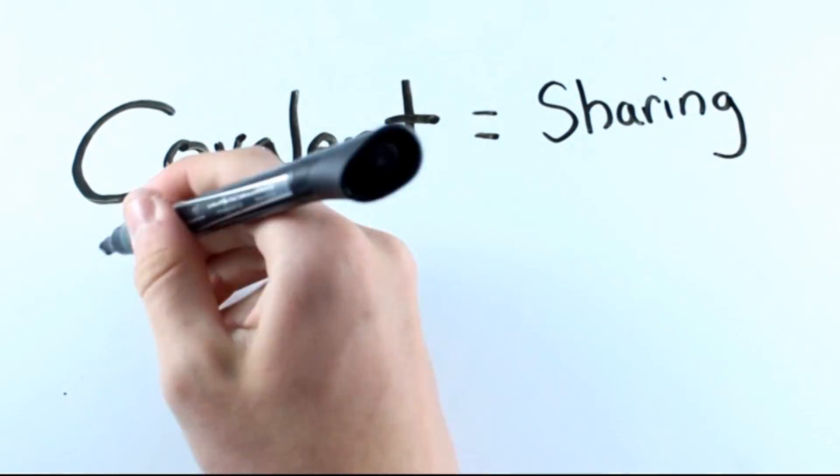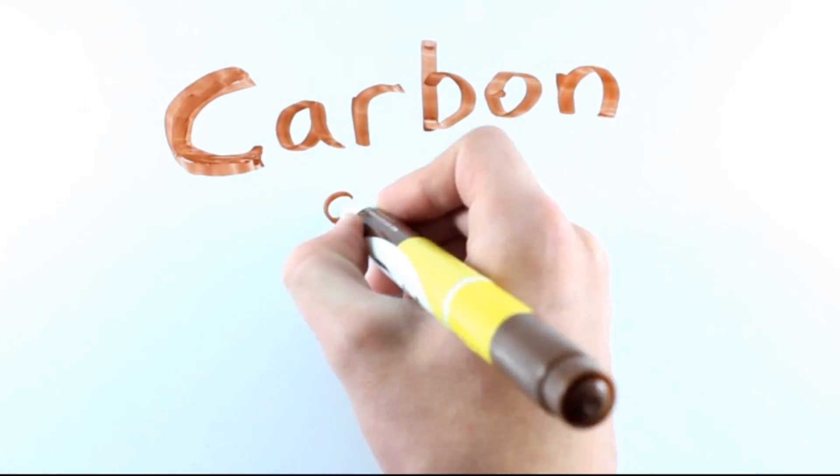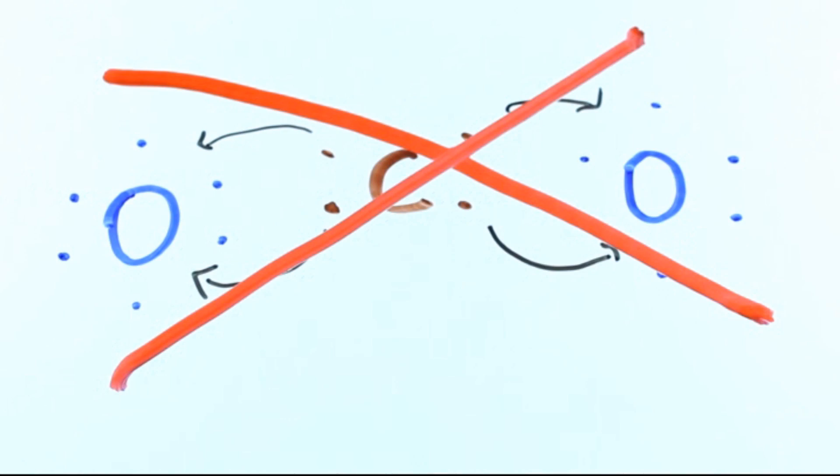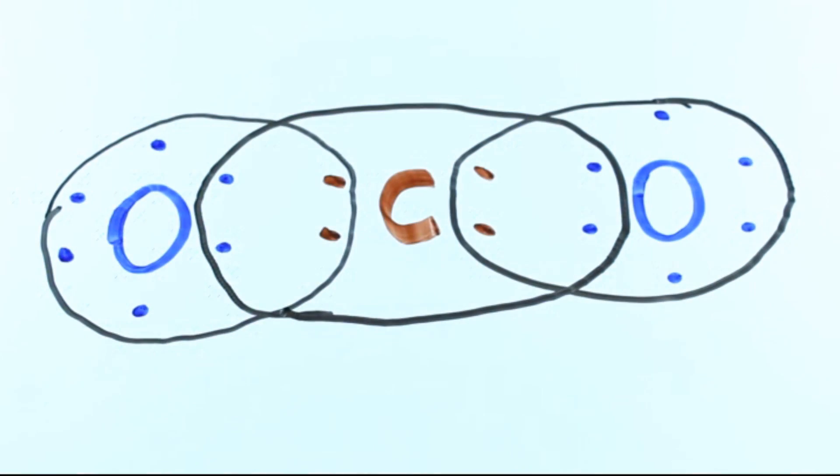So there we have it. Covalent is sharing and ionic is stealing. An extra thing to keep in mind, carbon always shares. So if you have one carbon and two oxygen, the oxygen can't steal two from the carbon to get to eight. Carbon has to share.